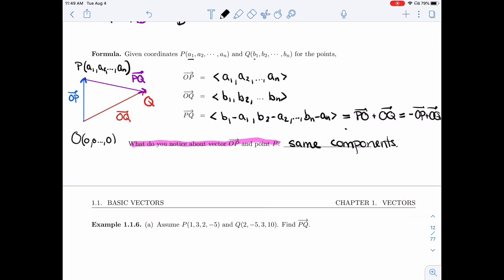So let me write this as OQ minus OP. So if you want a vector PQ, you can just subtract the position vector of P from the position vector of Q.